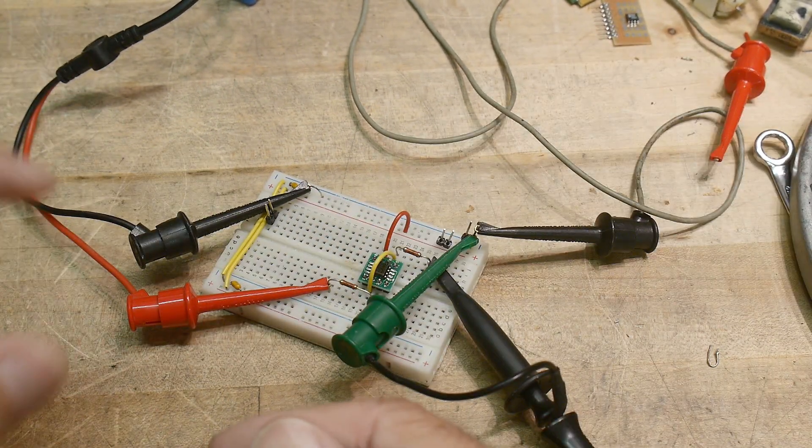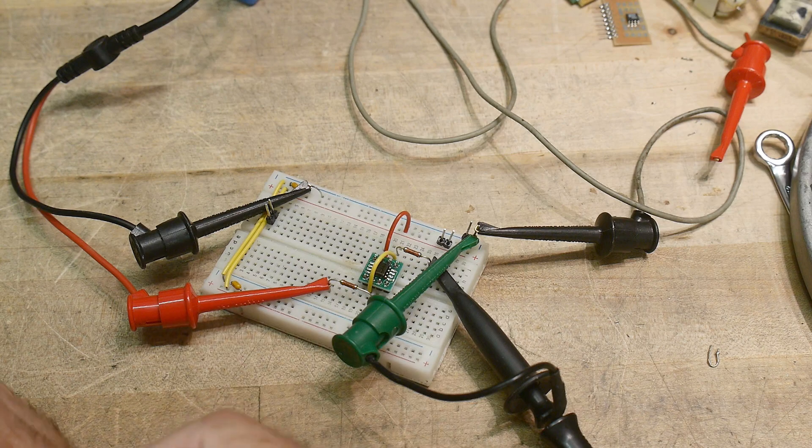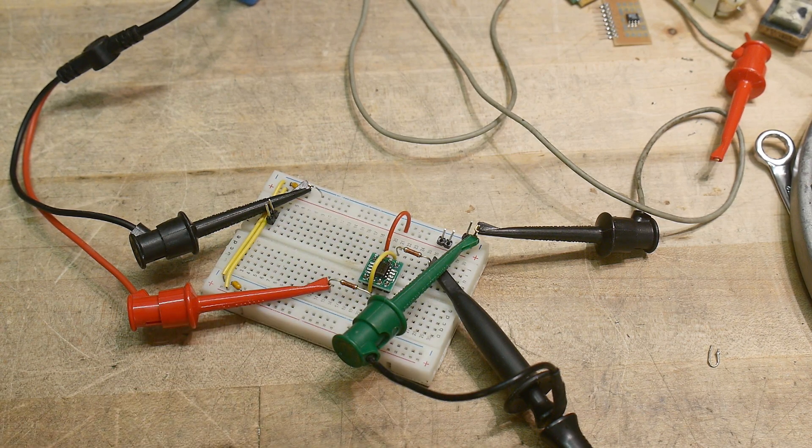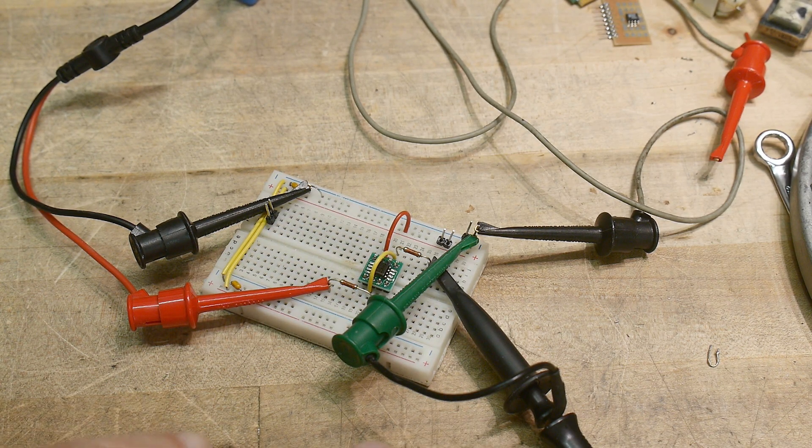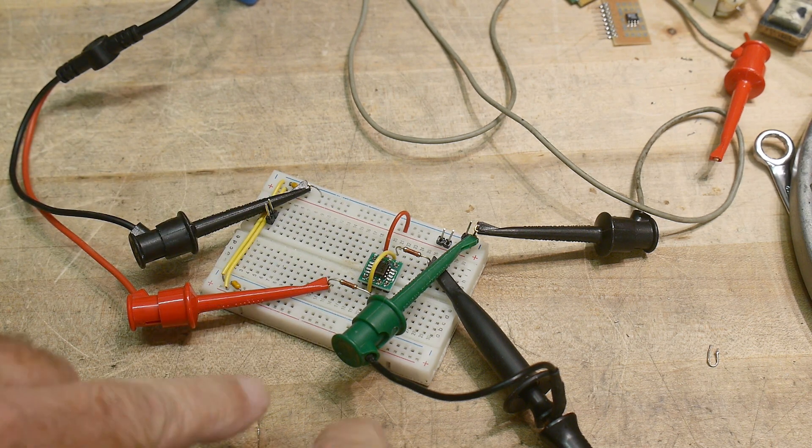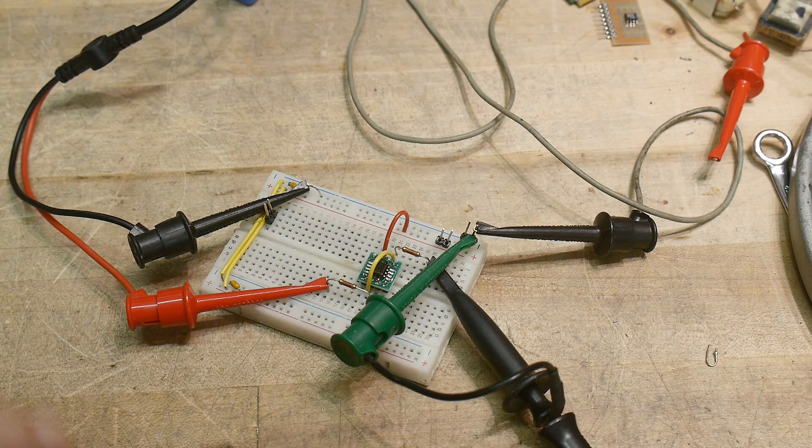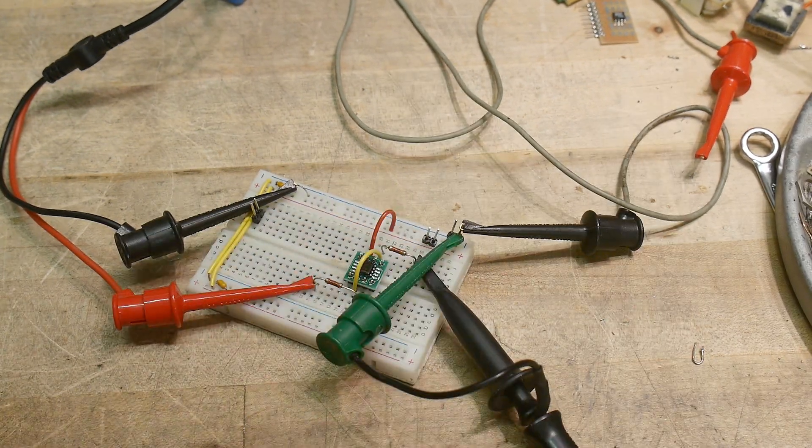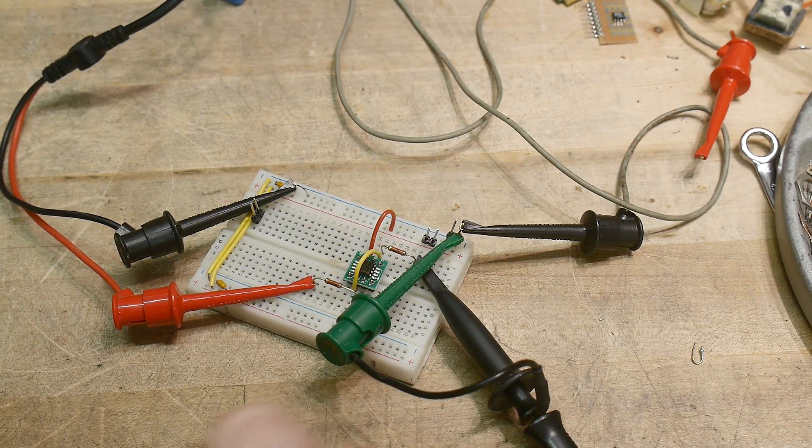So I just have it set up in a non-inverting one-to-one buffer. I've taken the output and shorted that to the negative input, and then we're going to be inputting on the positive input, look at the output. So it's just a unity gain non-inverting buffer.